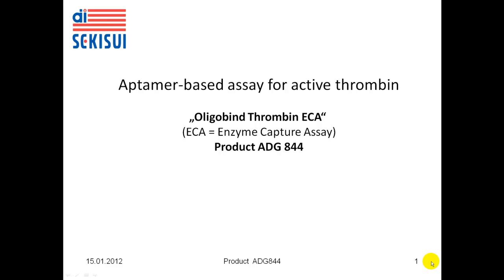In this presentation, I want to provide information on a novel assay provided by American Diagnostica GmbH. It is an aptamer-based assay for active thrombin, called Oligobind Thrombin ECA — ECA for Enzyme Capture Assay — and it has the product number ADG844.